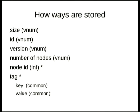Ways are stored fairly similarly. Because there are not nearly as many ways as there are nodes, I'm using a vnum to store the IDs on ways. The node list is stored as a number of nodes followed by the list of nodes — basically still a 32-bit integer for each node ID.